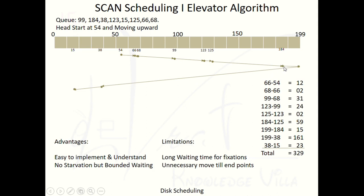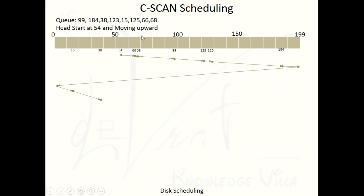Another limitation is the unnecessary move to the end point. The last request was at 184 but the head moves all the way to 199, so there is unnecessary movement from 184 to 199 and back. We need to reduce these unnecessary moves. Also, there was a calculation mistake in the earlier SCAN video — the total seek time was 329, not 3146. I've commented the correction on that video.